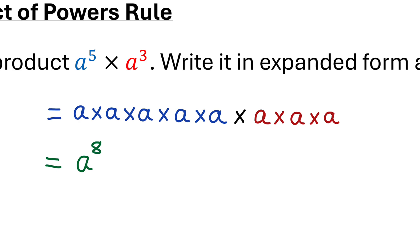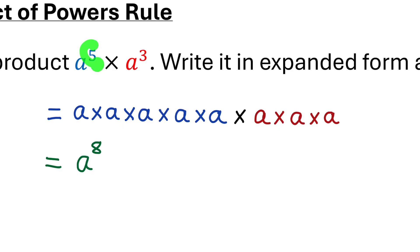In this expanded form, I can see that I have repeated multiplication by a. How many factors of a do I have? Well, I have five plus three, so eight factors of a in total, which means I could rewrite this repeated multiplication as a single power: a to the power of eight.